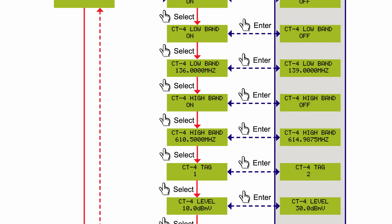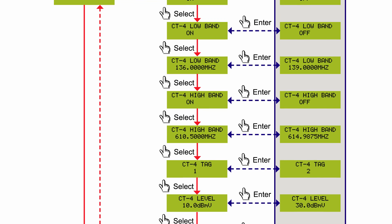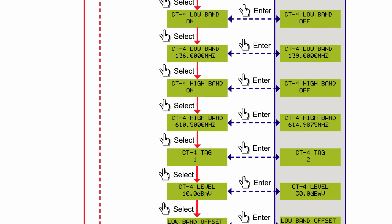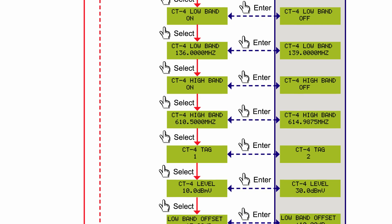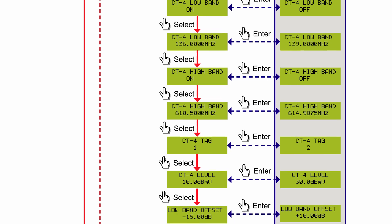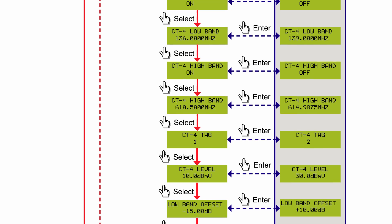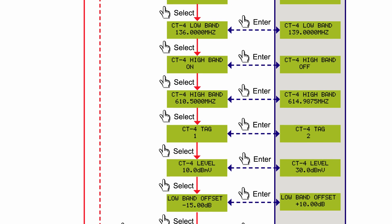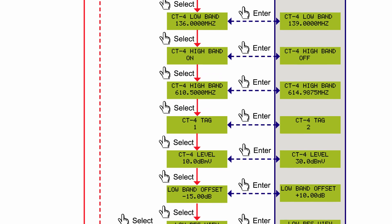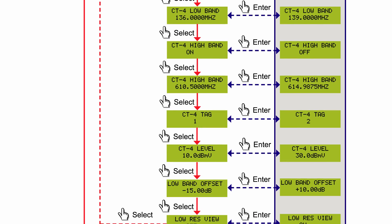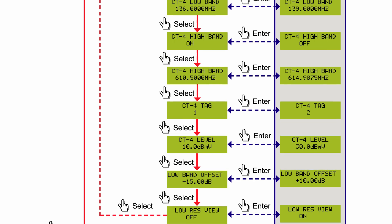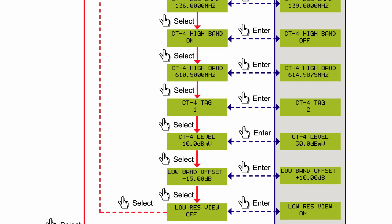Once you reach the appropriate setting, press enter to accept the change. Notice the selection is no longer flashing. From there, press select to step through the remaining main menu items you wish to verify or change. Simply repeat this process for each step to make all the necessary changes to the CT4 setup.